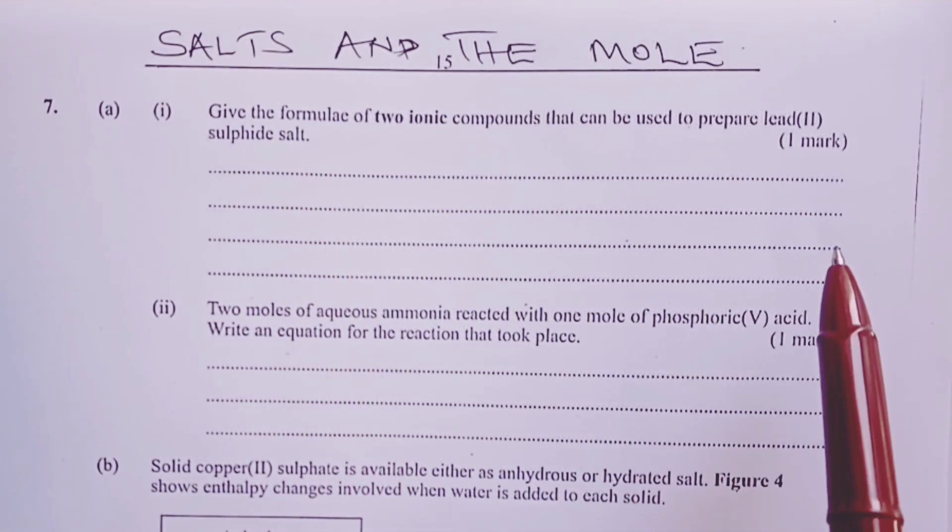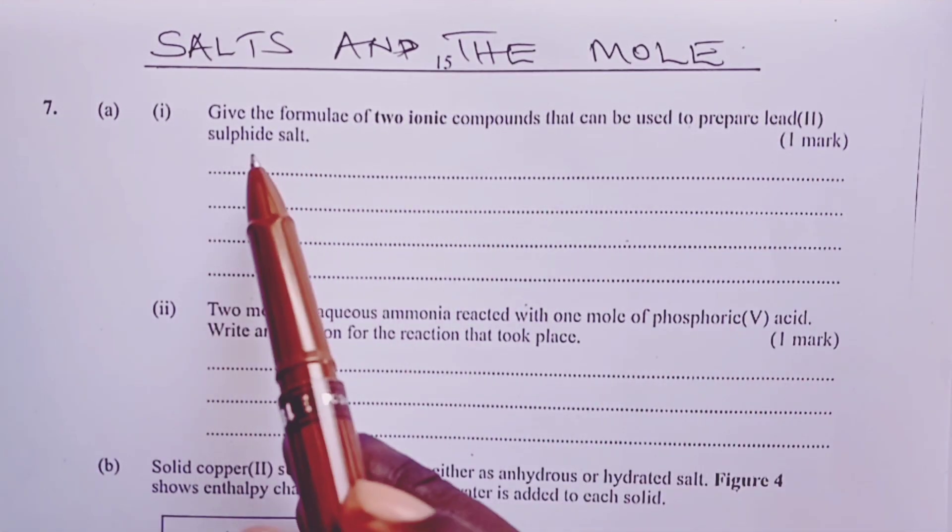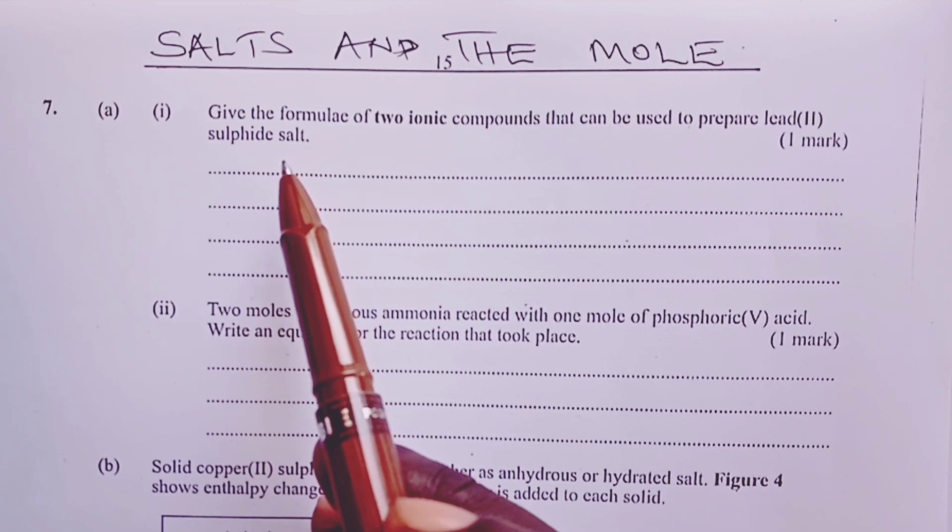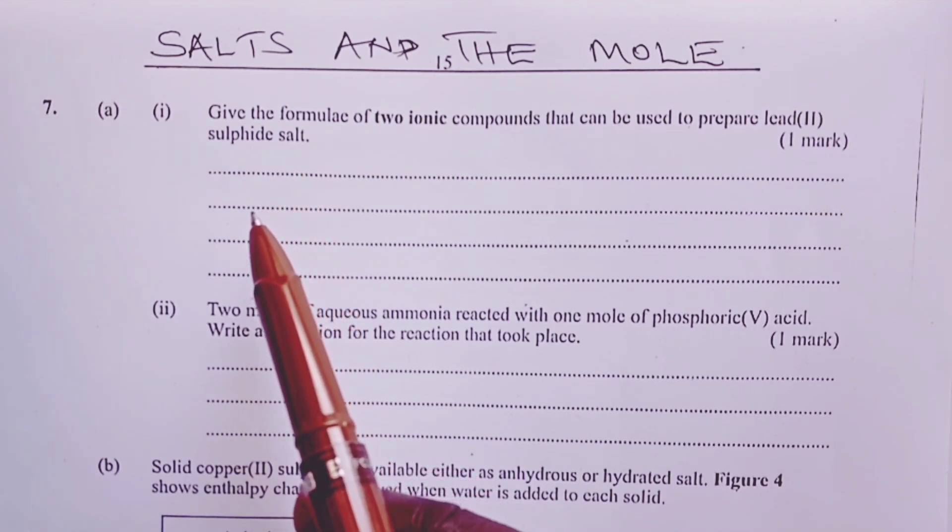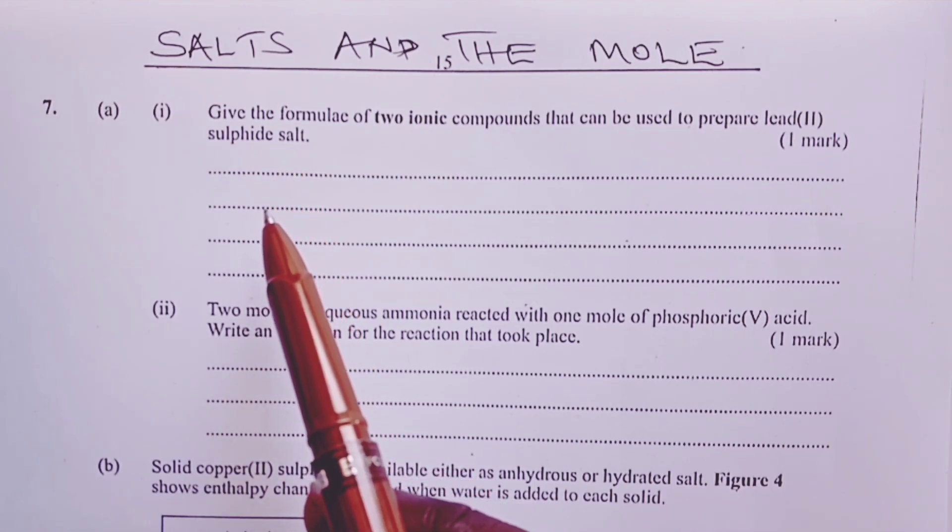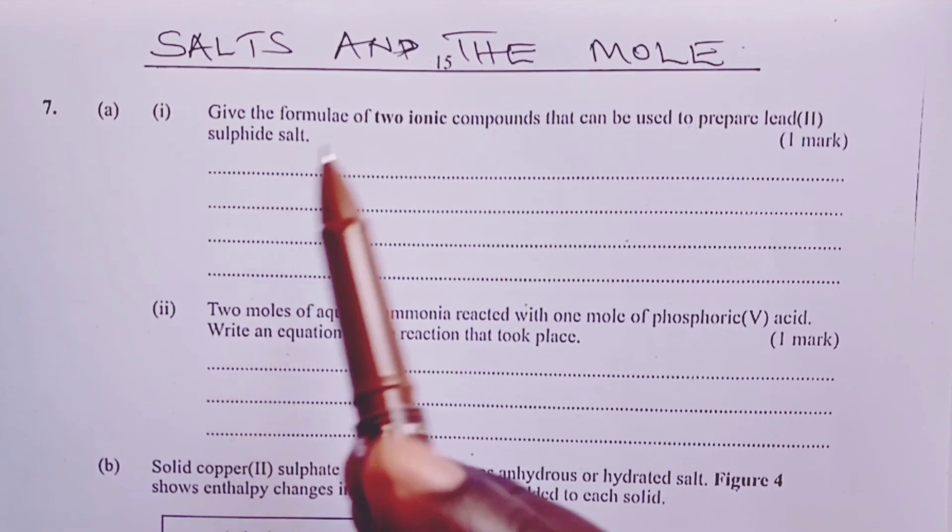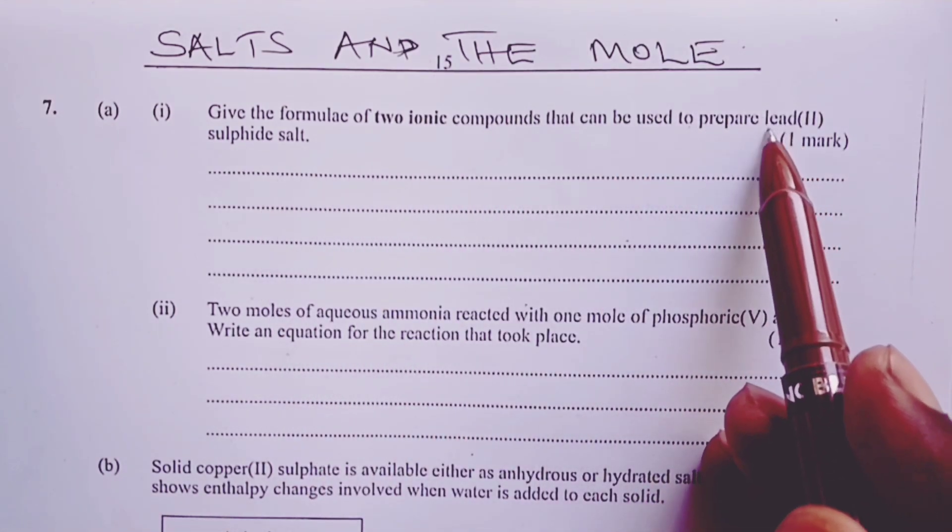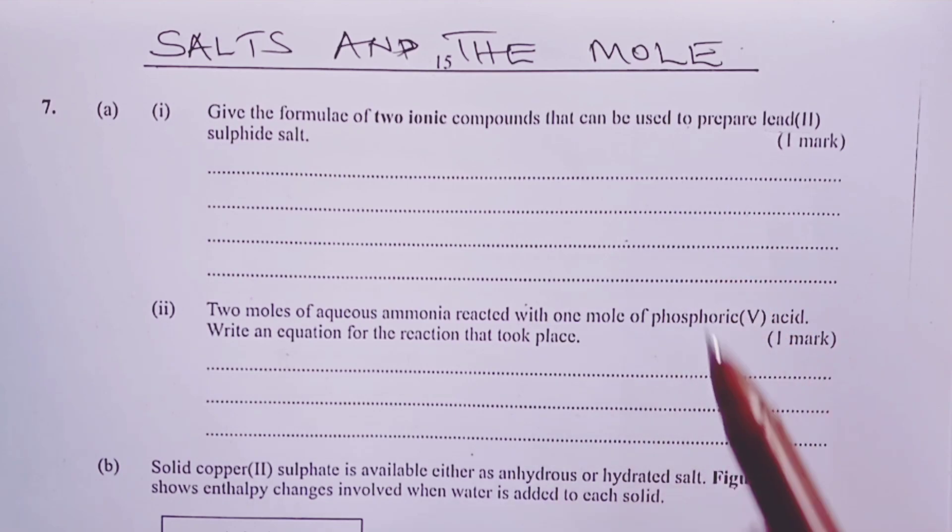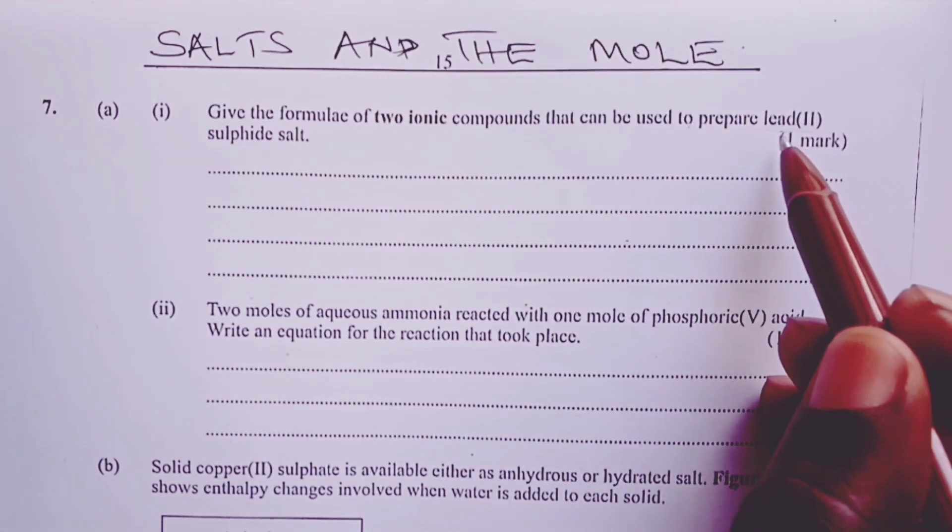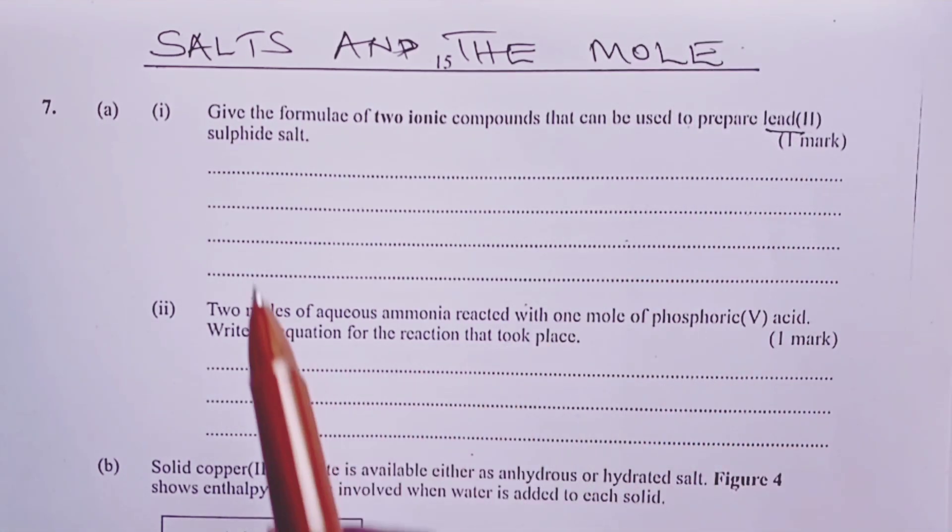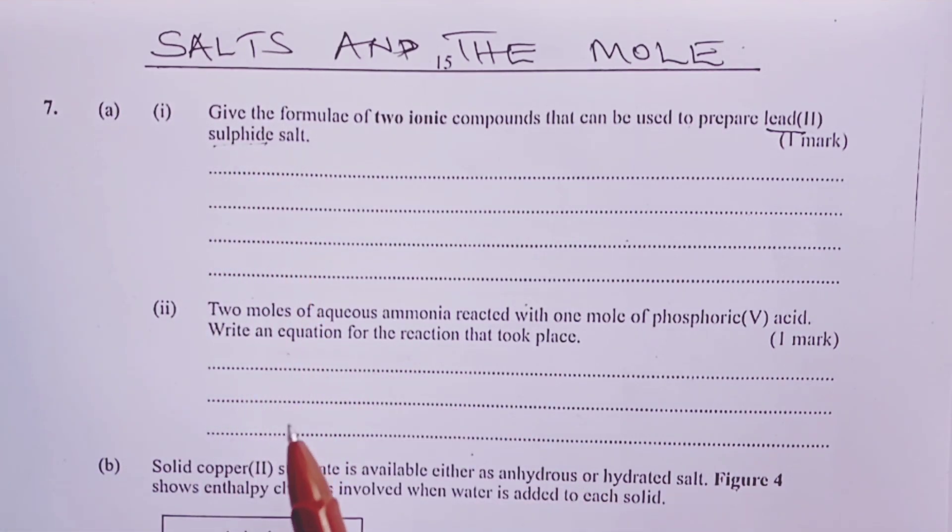So to prepare lead(II) sulfide, we need to react two soluble salts. One containing lead(II) ions and the other one containing sulfide ions.